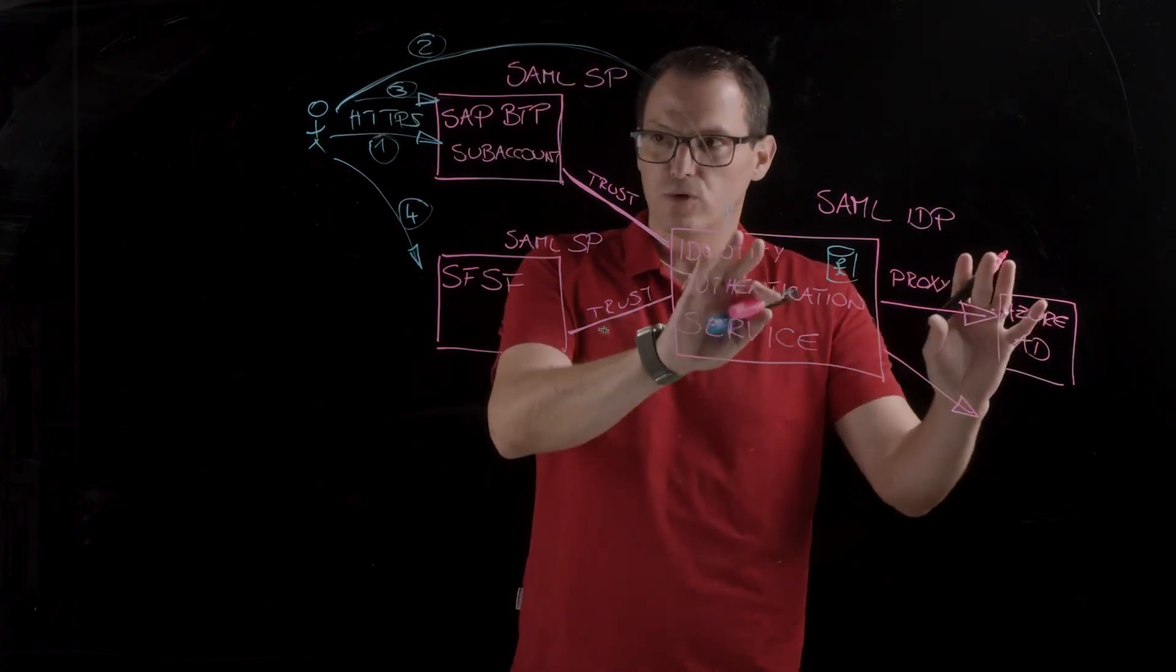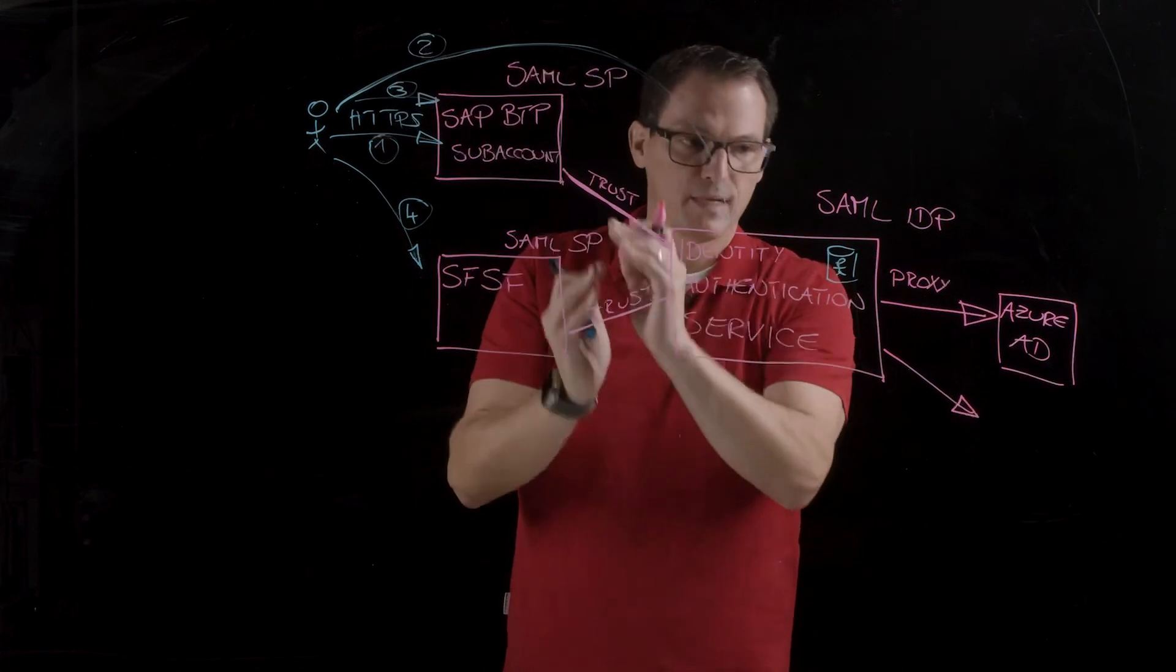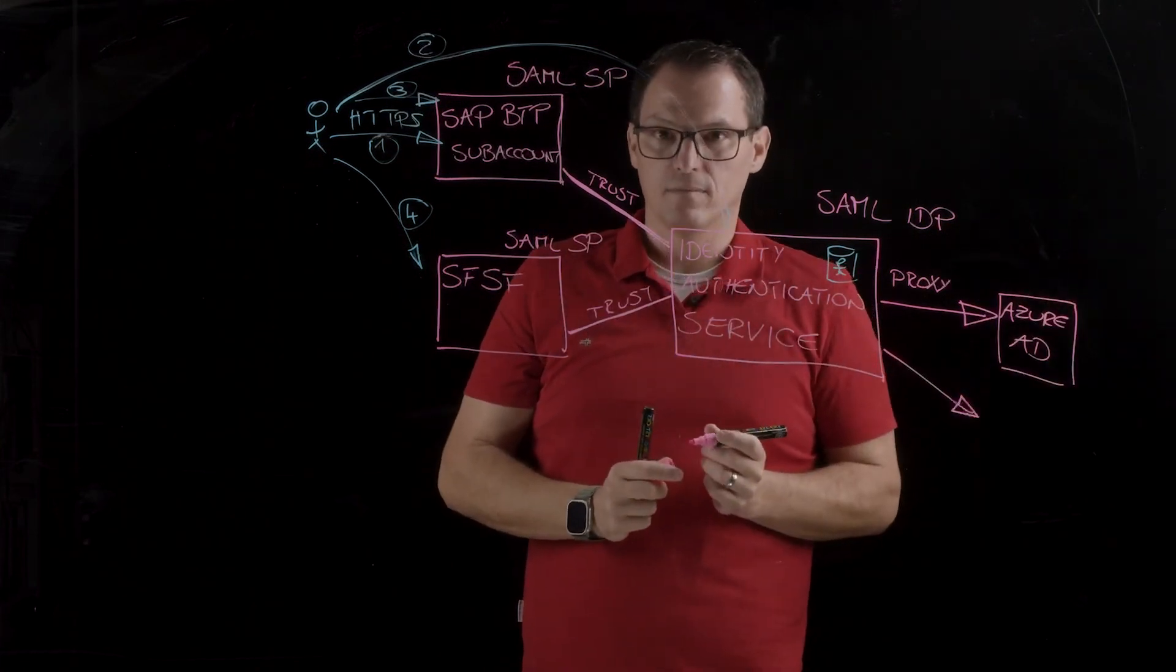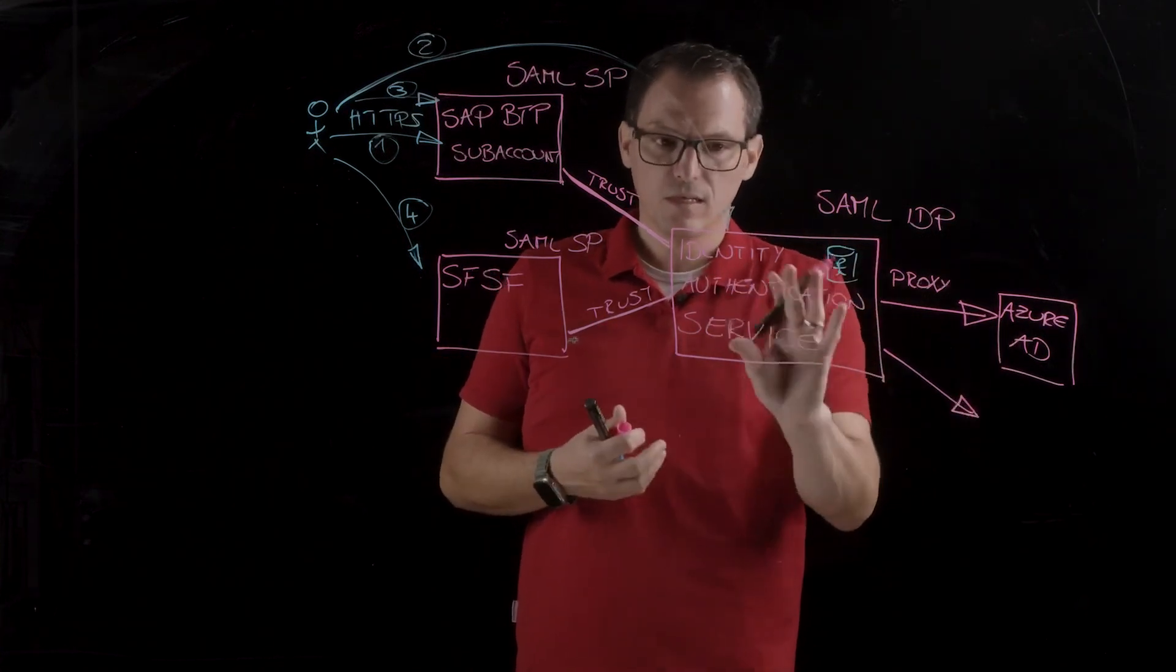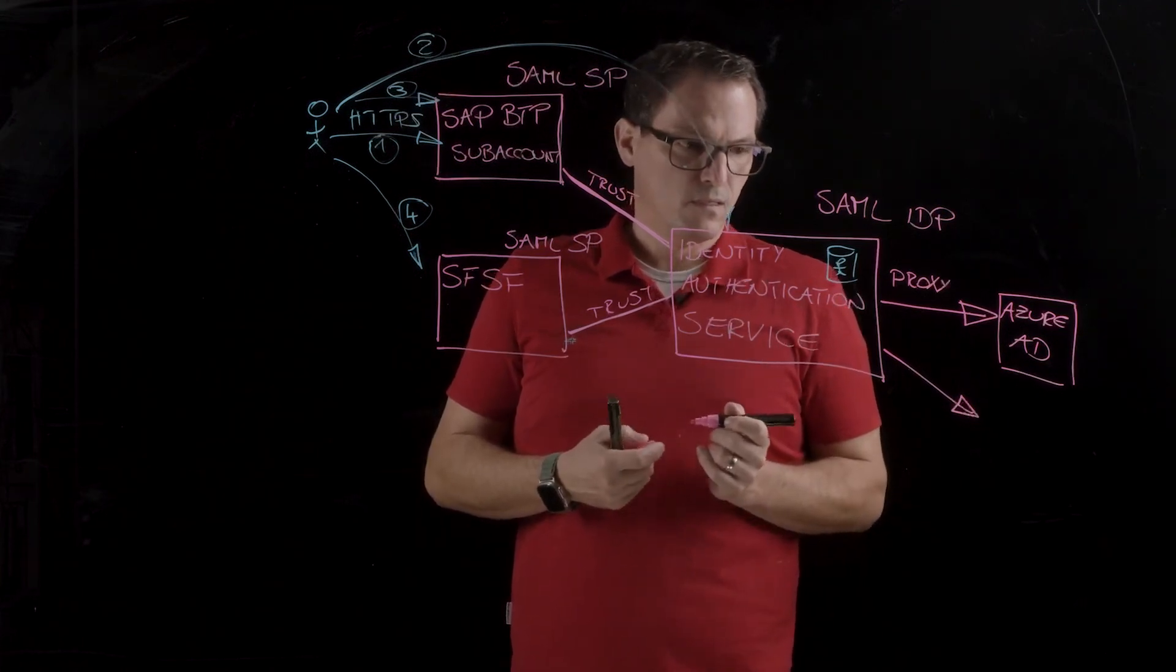The advantage of this is that you can connect multiple identity providers here in this so-called proxy mode. So, we are using a proxy mode here. So, this is acting as a proxy in this case. So, we just switch the roles here. The identity authentication service becomes the client, so the service provider, and this would then be the identity provider. And that's also a feature that is quite often used. That is, it is used as a proxy.